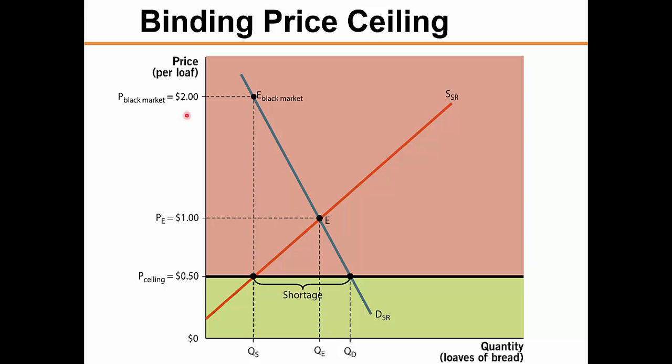The black market price eliminates the shortage caused by the price ceiling. However, the price ceiling has created two unintended consequences: a smaller supply of bread is produced — quantity supplied is less than quantity demanded — and a higher price exists for those who are forced to purchase bread on the black market.